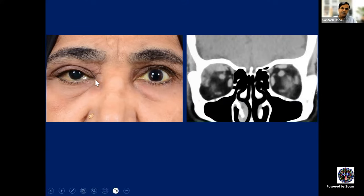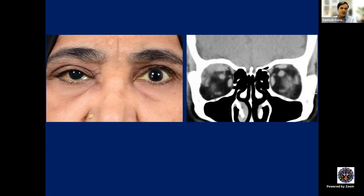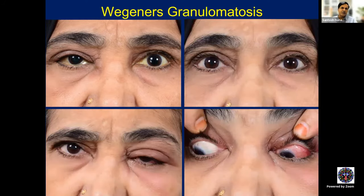This patient has broadening of the nasal bridge — she did not have it before. Whenever a patient comes with orbital inflammation and has this kind of broad nasal bridge of recent onset, it indicates collapse of the nasal septum — suggesting Wegener's granulomatosis. This patient indeed had Wegener's granulomatosis confirmed on histopathology, with a waxing and waning course of orbital inflammation that settled with intravenous methylprednisolone and oral azathioprine.